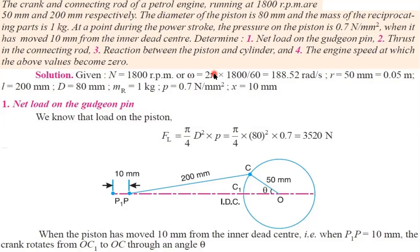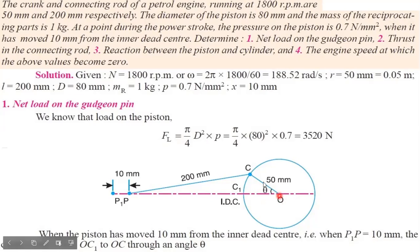Here we are not given the angle theta directly, so we need a graphical representation to calculate the theta value. We need to determine: first, net load on the gudgeon pin; second, thrust in the connecting rod; third, reaction between piston and cylinder; and fourth, engine speed at which all values become zero. Before starting, draw a graphical diagram: take the radius as 50mm and draw a circle.